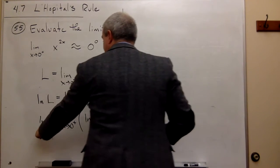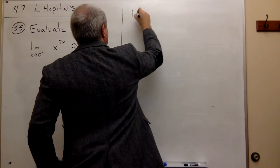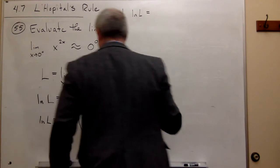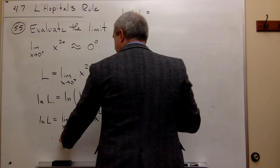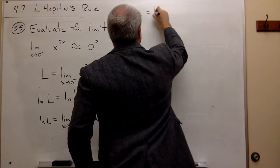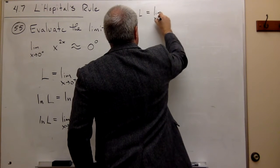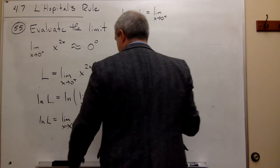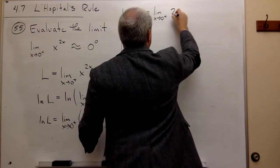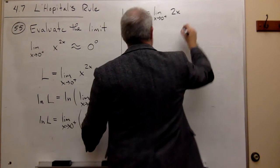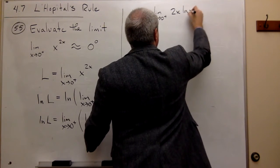So if I do, I get that ln of L is equal to the limit as x goes to zero from the right of 2x times ln of x.